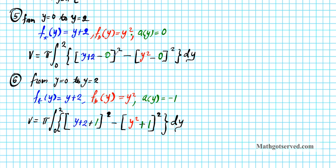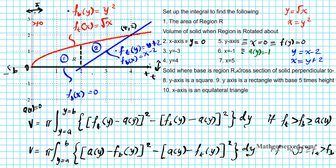The only difference between this and the previous problem is that we changed zero to negative one and resolved the sign. Now for x equals 5: x equals 5 is equivalent to a of y equals 5. This line is clearly above — to the right of — both functions, so we have to use the second formula, where the axis of rotation is bigger than both functions.